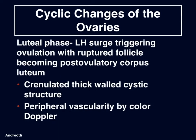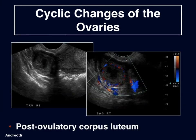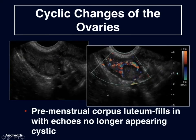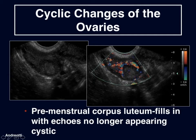Here we have the ovulatory follicle, which usually measures between 18 and 25 millimeters. Within this ovulatory follicle, often around 24 hours prior to ovulation, we may see a smaller cystic structure called a cumulus oophorus — a structure formed by the separation of the granulosa layer of the follicular wall from the thecal layer containing the ovum. Following the LH surge which triggers ovulation, a follicle will rupture and becomes the post-ovulatory corpus luteum — a crenulated thick-walled cystic structure that also demonstrates peripheral vascularity by color Doppler. The pre-menstrual corpus luteum will then form and fill in with echogenic material, predominantly blood, and no longer appears cystic.